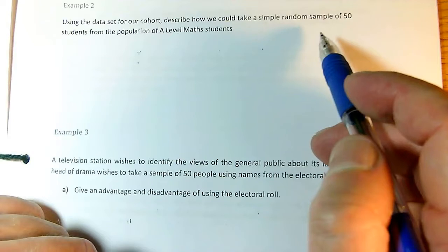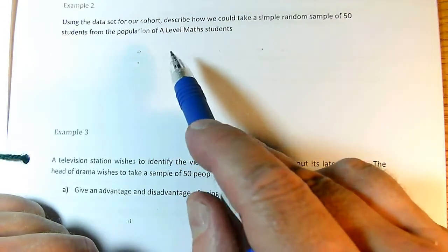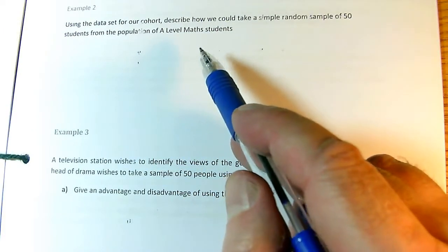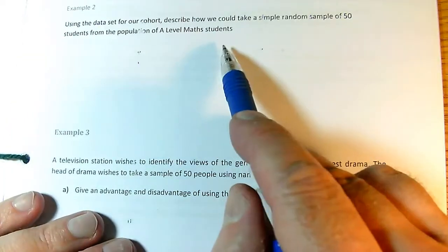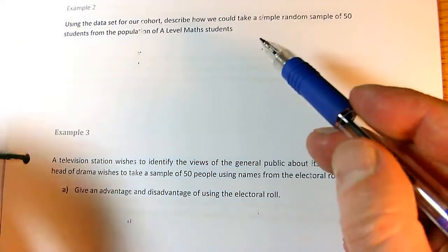I suppose we wanted a random sample of 50 students from the population of A-level math students. So the first thing to ask is, A-level math students, does that correspond with what our data set's about?